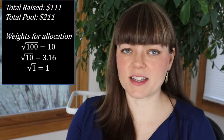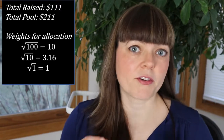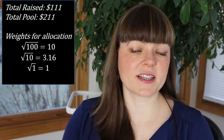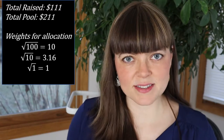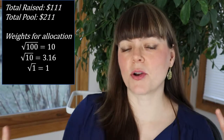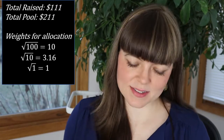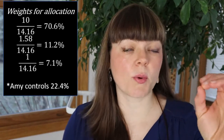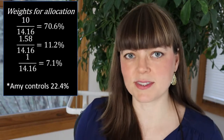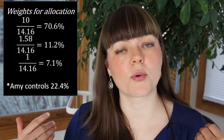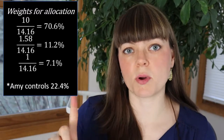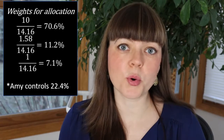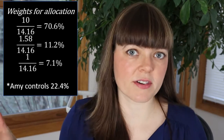Bob's $100 donation translates into 10 votes (√100). Amy's $10 translates into √10 = 3.16 votes. Cindy's $1 has a weight of 1. The total voting weight is 14.16. Bob has 10/14.16 = 70.6% influence over the $211. Cindy has 1/14.16 = 7.1% influence even though she only contributed $1 out of $111 total donated.